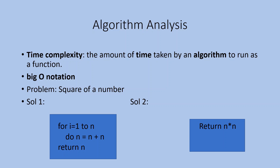Time complexity is the amount of time taken by an algorithm to run as a function — that is algorithm execution time. That is time complexity, and that is Big O notation. For example, finding the square of a number has two solutions — Solution 1 and Solution 2. In Solution 1, steps include a loop: for i equal to 1 to n, do n equal to n plus n, root n. If you are not interested in the details of this program, you can skip this and go to Java.